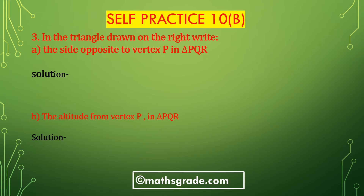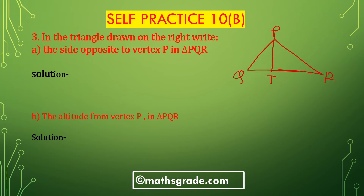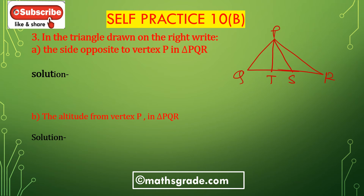We'll solve question number 3, first bit A: the side opposite to the vertex P in triangle PQR. Draw the given figure — this is triangle PQR, with points T and S marked. The vertex is P, and the side opposite to the vertex P is QR.